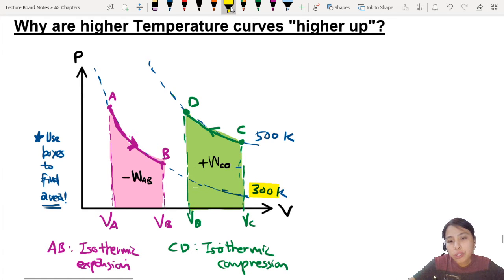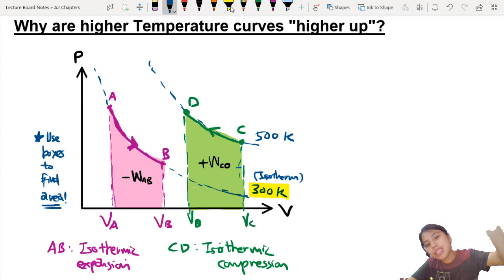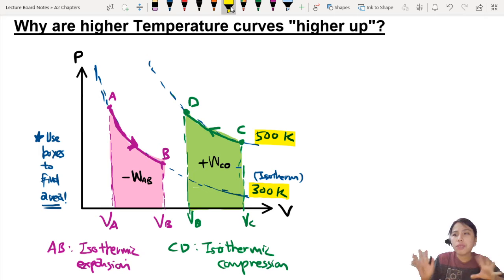If you notice, the 300 Kelvin curve, or what we call an isotherm curve, iso means same, therm means temperature. So same thermal temperature. All along this line, you have the same temperature at every point. But when you increase the temperature to 500 Kelvin, the curve shifts up. The question is, why?